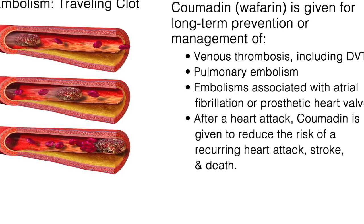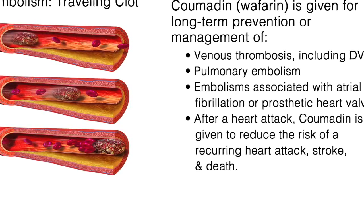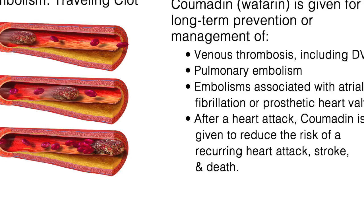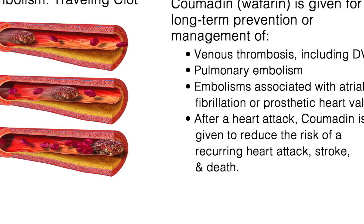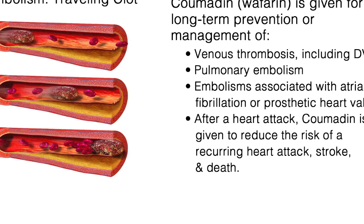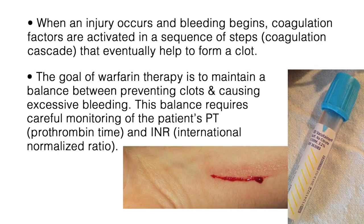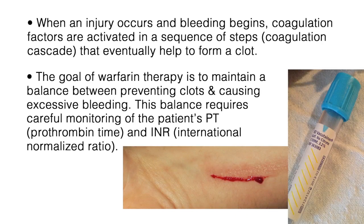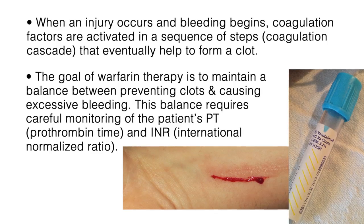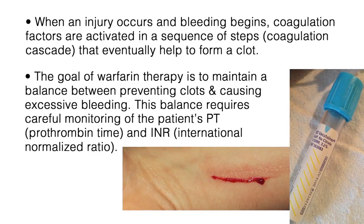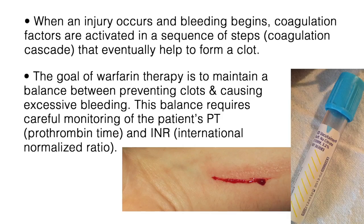Coumadin does not have a direct effect on an established thrombus or blood clot, but once a thrombus has occurred, the goal is to prevent secondary complications that may result. Several proteins called coagulation factors are involved in the process the body uses to form blood clots to control bleeding. When an injury occurs and bleeding begins, coagulation factors are activated in a sequence of steps, called the coagulation cascade, that eventually help to form a clot.